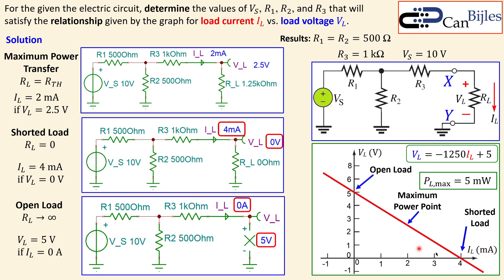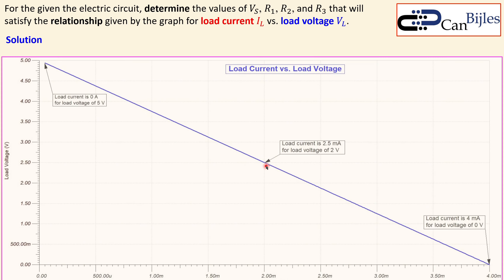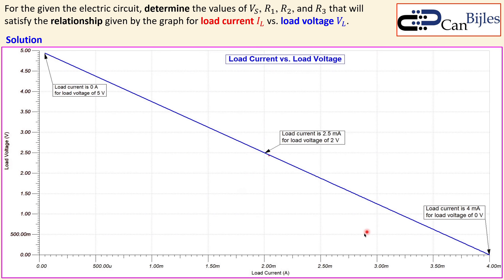We don't yet know what's happening between the two endpoints — it could behave in unexpected ways. So we need to check in more detail by making a plot. We can do this in the SPICE simulator: a plot with the x-axis as load current and the y-axis as load voltage.